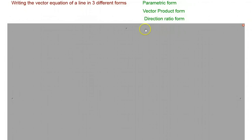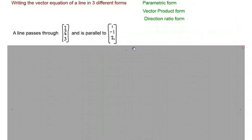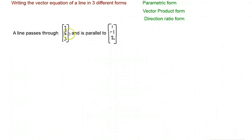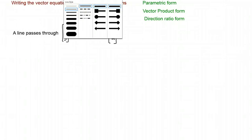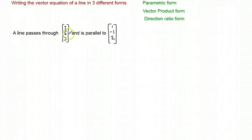So to start with we are going to have a look at an example. We are going to have a look at a line that passes through the point (2, 6, 3) and it is parallel to the vector (1, -1, 2). So we have got a point that it passes through and we also know the direction the vector is going in.